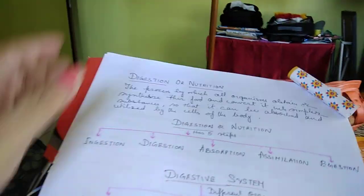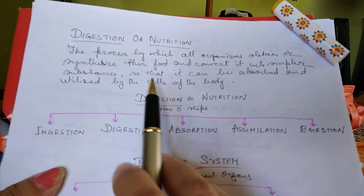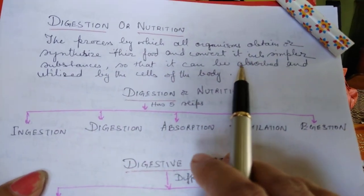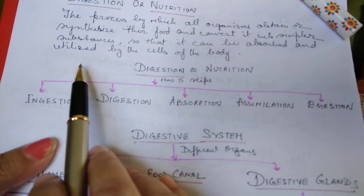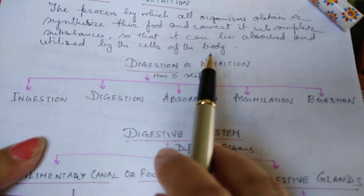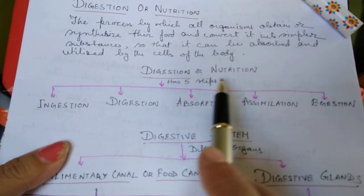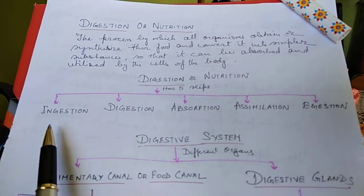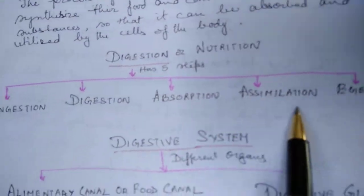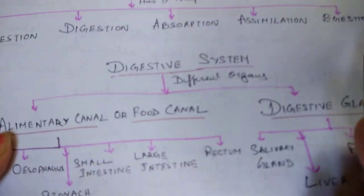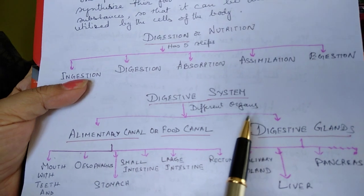Digestion or nutrition is the process by which all organisms obtain or synthesize their food and convert it into simpler substances so that it can be absorbed and utilized by the cells of the body. Digestion and nutrition involves five steps: ingestion, digestion, absorption, assimilation, and ejection. The digestive system has different organs.